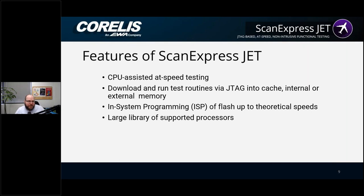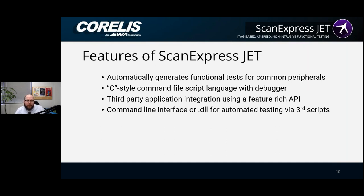We're going to use a CPU to assist us with all of this. We download and run test routines using that CPU. We often try to use cache whenever it's available — if we run a test from cache rather than the main memory array, we can test the full memory array without worrying about our code being stored there. With in-system programming, we can get up to theoretical speeds. We've supported a lot of different processors — we have a large library, focusing on ARM cores, as well as PowerPC and other families like MIPS processors.